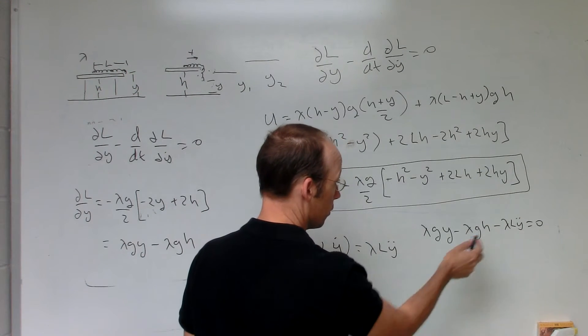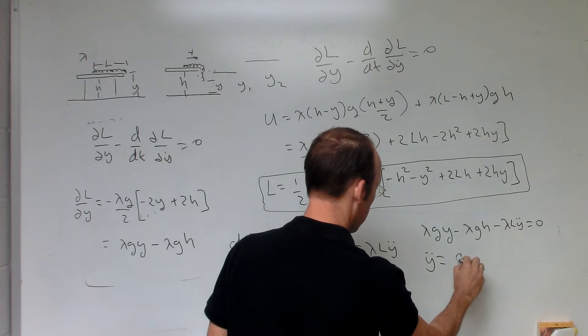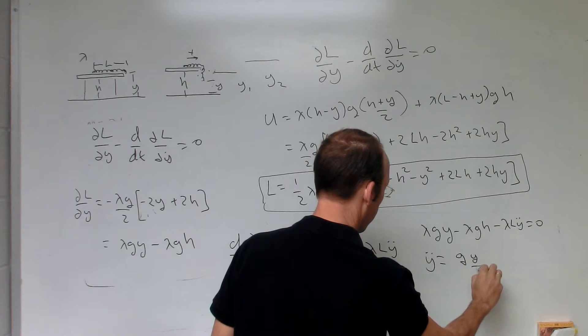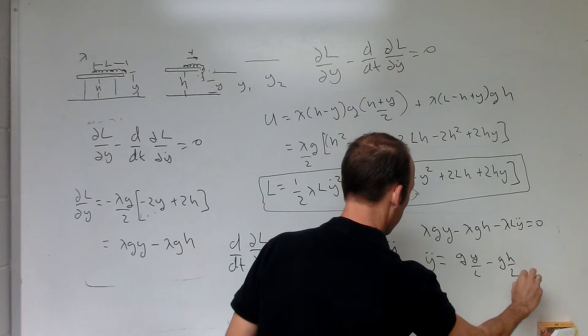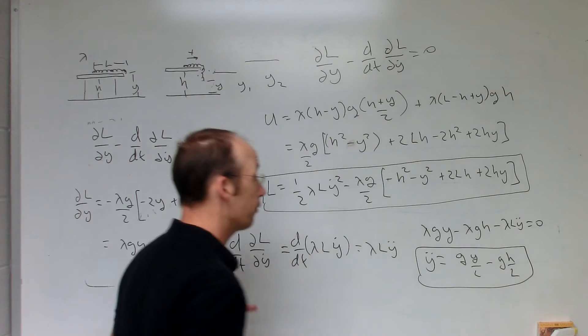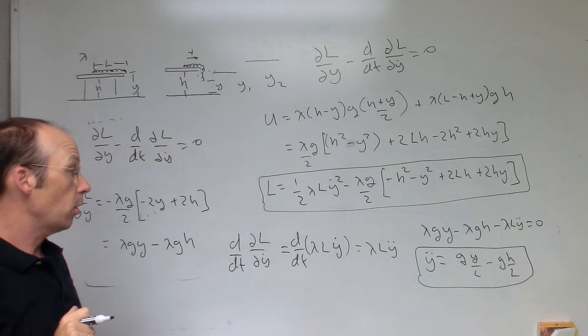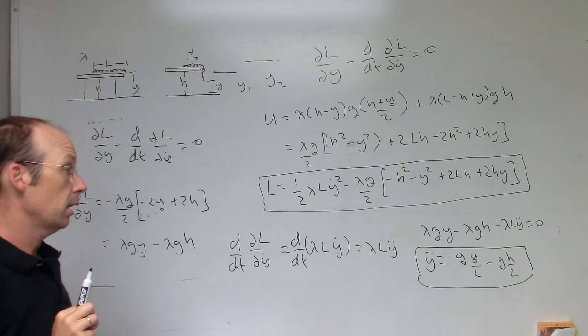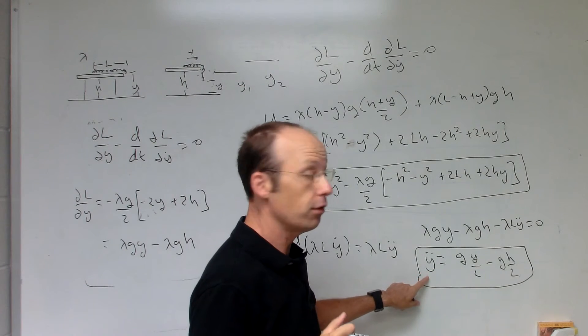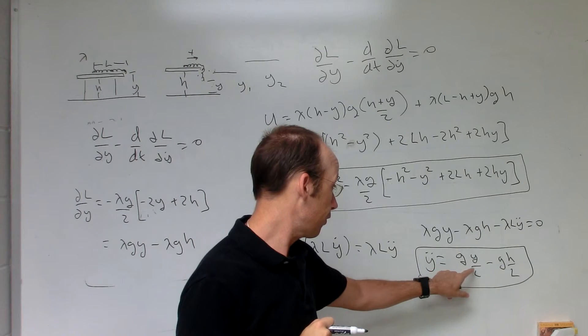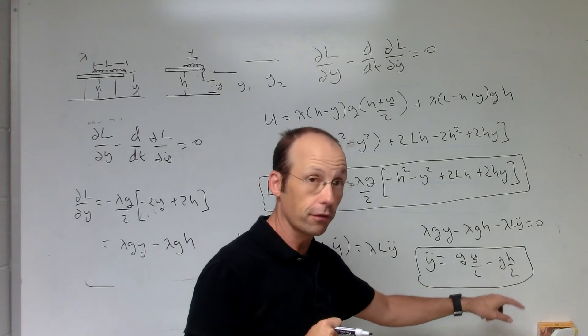The g does not. So if I solve this for y double dot, I get g y over L minus g h over L. And that's really unfinished. But let's just check. So if, let's see if it has the right units. This should have units of meters per second squared. That's meters per second squared. Meters over meters. That's good. Meters per second squared. Meters over meters. That's good too.